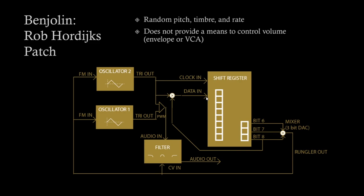A shift register, if you're not familiar with it, is a digital device that takes in clock and data. At each clock pulse, whatever high or low is at the data input is moved down the line — it only understands high and low. But you can combine the bits to create analog voltages. If you take three bits, you get eight values, so there are eight possible voltage steps that can come out by mixing those together and using it as a CV feeding into the oscillators and also the filter. Additional randomness is created by exclusive-ORing bit 8 with the triangle wave of oscillator 2, which we keep at a lower frequency than oscillator 1.